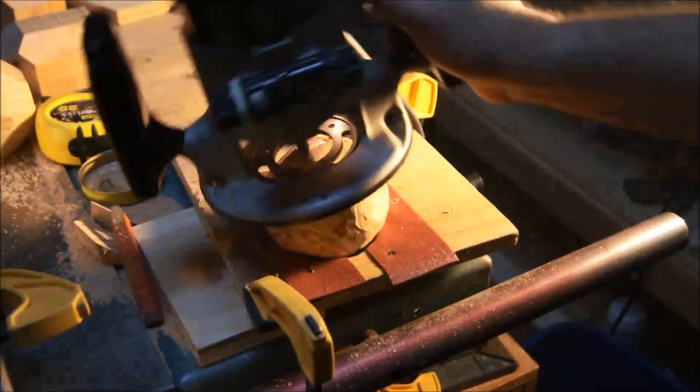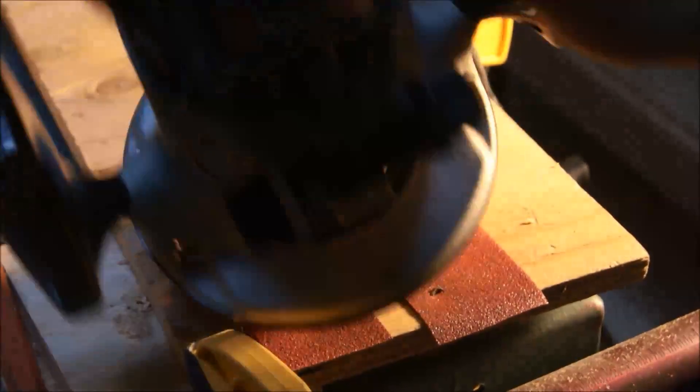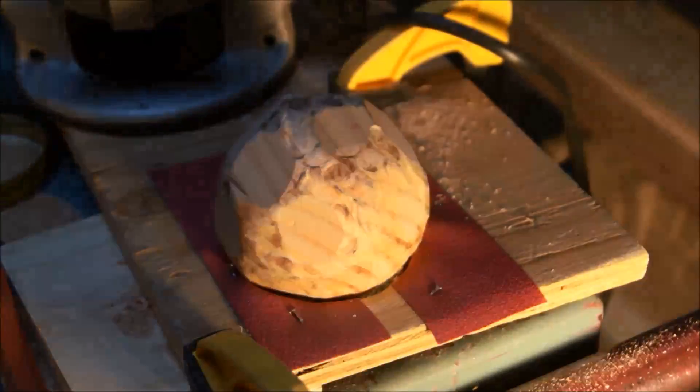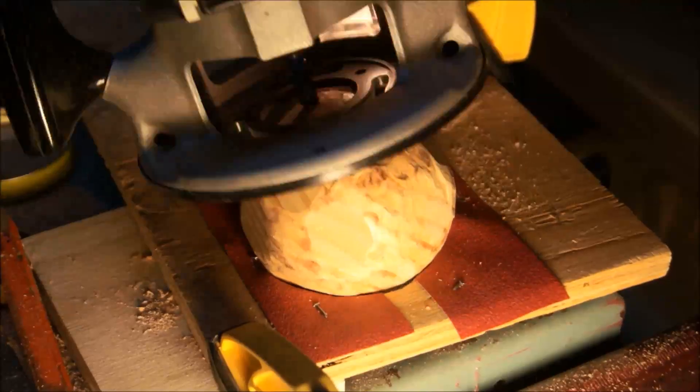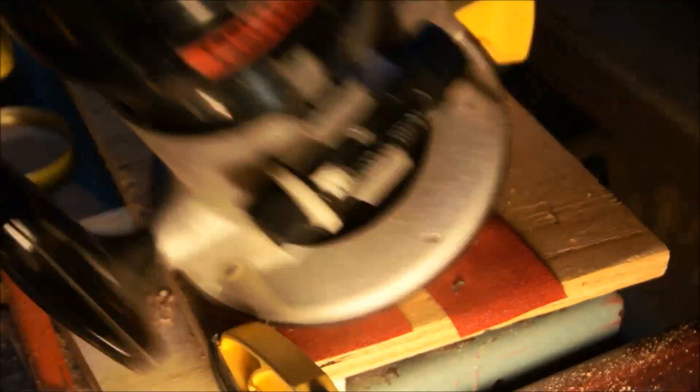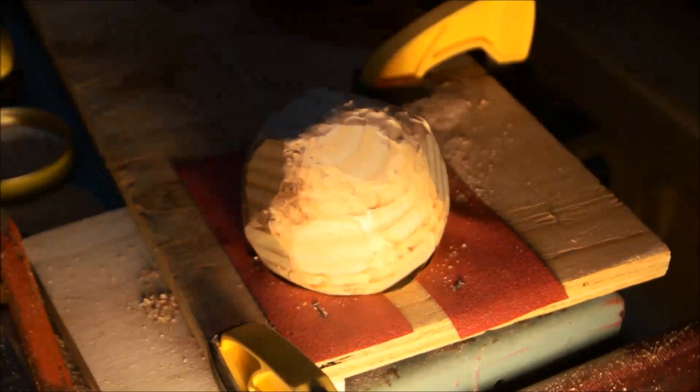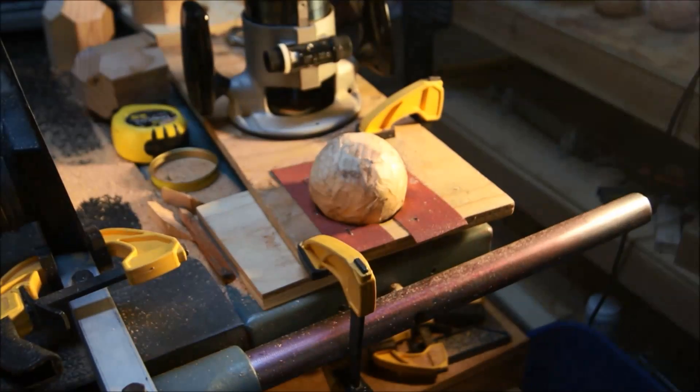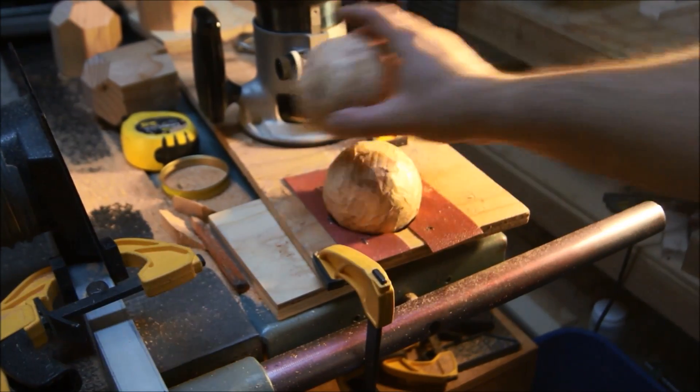We do a few more passes, incrementally lowering the bit. We end up with rough spherical blanks. Now we need to sand.